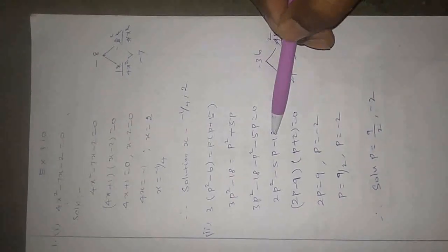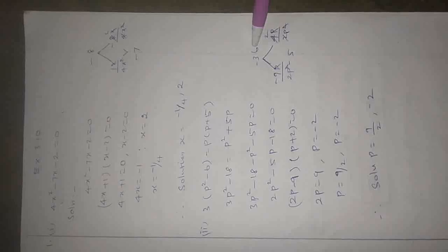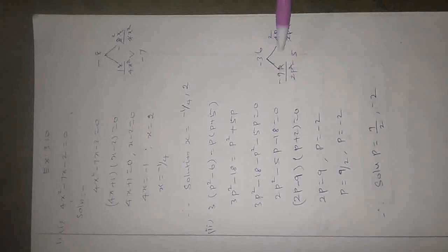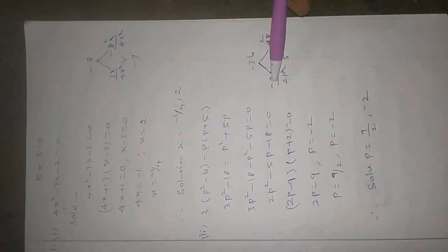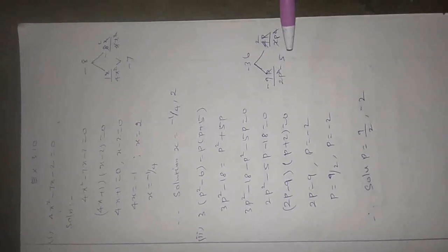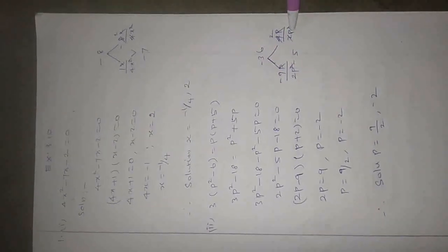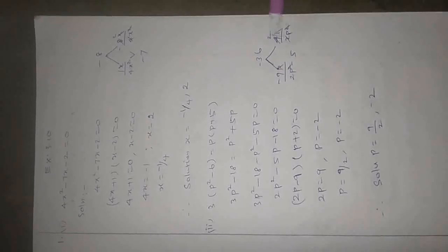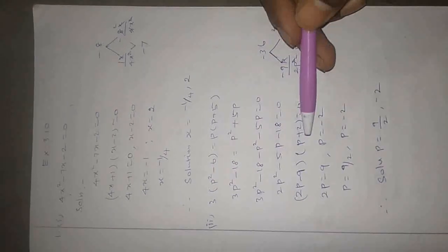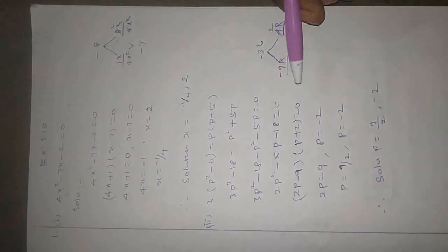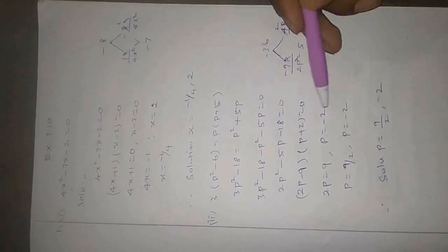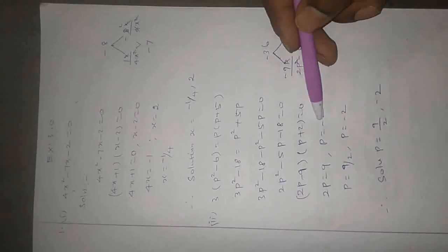2 into minus 18 equals minus 36. Possible factors: minus 9 and plus 4 — since minus 9 times plus 4 is minus 36, and minus 9 plus 4 equals minus 5. For 2p squared: p×p cancel; 1×2 is 2, 2×2 is 4. Factored form: 2p minus 9 into p plus 2 equals 0. Solving: minus 9 converts to plus 9, so p equals 9 by 2, and p equals minus 2.